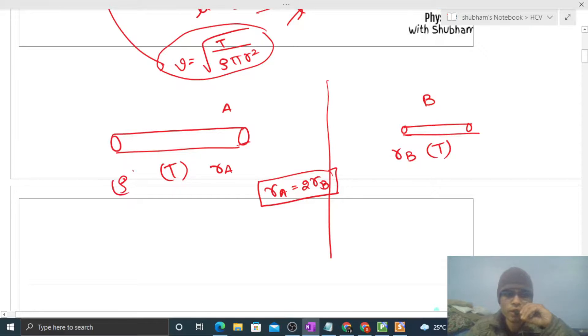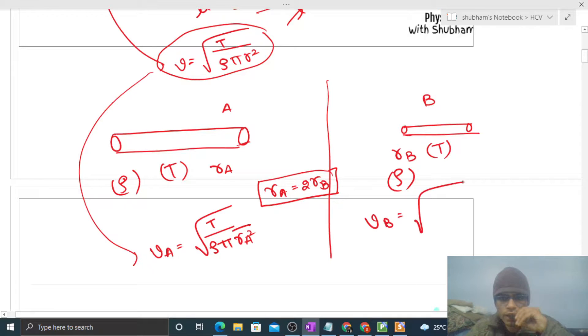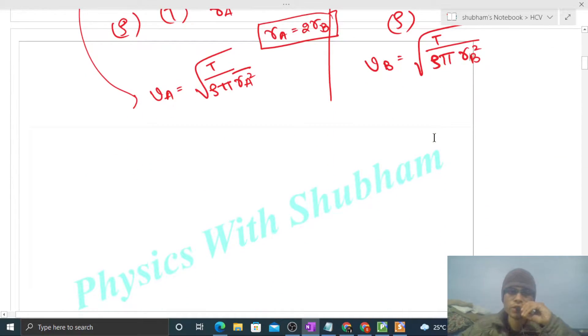VA will be square root of T divided by density times π times RA². VB will be square root of T divided by density times π times RB². Both have same tension, same density, and π is constant. Now take the ratio VA by VB.